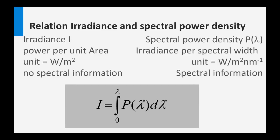Spectral power density has spectral information. It is the irradiance per spectral width. So if we choose a part in the blue spectrum, we have the spectral power density at a wavelength in the blue. Its unit is then watt per square meter per nanometer. The per nanometer shows that we are selecting a spectral range, so it has spectral information. The spectral power density shows whether the light incident on the surface contains more energy in the blue, in the visible, in the red or infrared.